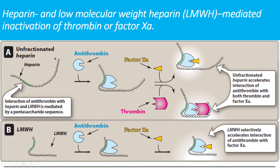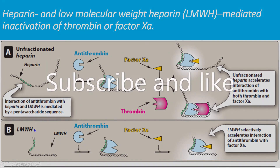In the case of unfractionated heparin, after binding to antithrombin 3, it inactivates both factor 10 (Xa) and factor 2 (thrombin). In the case of low molecular weight heparin, it specifically binds more selectively to factor 10. That is the only difference — otherwise they perform the same job. Thank you for listening.